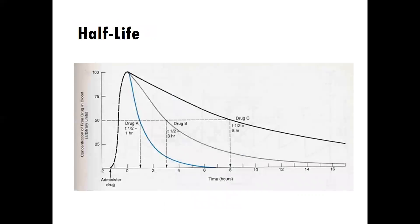I'm going to focus in class about half-lives and understanding how drugs work and how they work the way they do. You'll notice that this graphic has three drugs — drug A, B, and C — and we'll talk about why it is that some drugs leave the system much faster than others and what that means for the therapeutic effect of the drug.